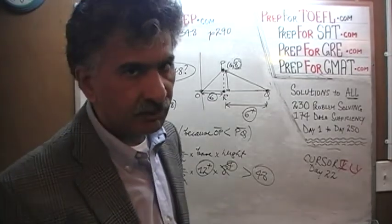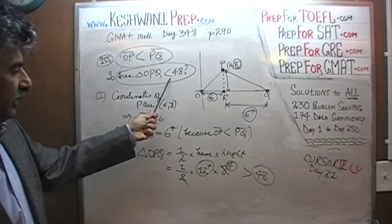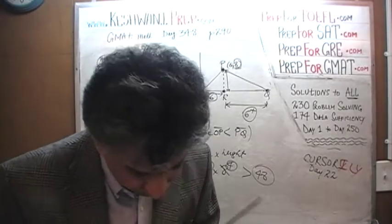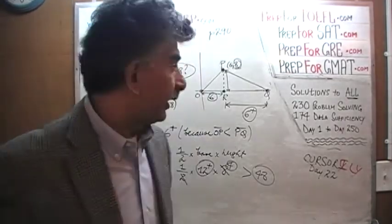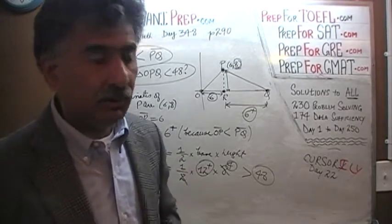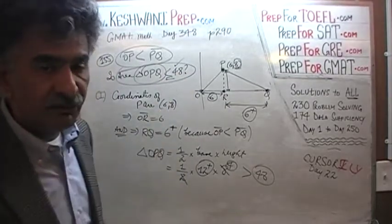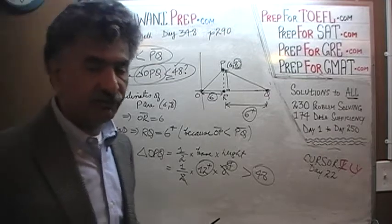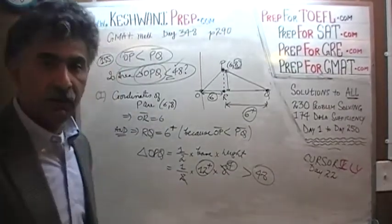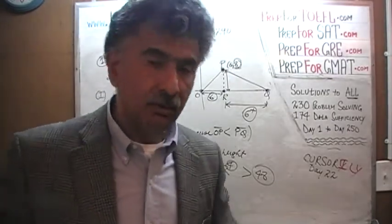Are we able to answer the question? Do we have sufficient data? The question was: is the area of the triangle less than 48? The answer is no — the area is not less than 48, it is more than 48. But it doesn't matter whether the answer is yes or no; since we are able to give a definitive answer, the first statement does the job. Even though the answer is no, the information in the first statement is still sufficient because it enables us to give a definitive yes or no.